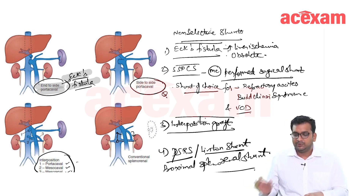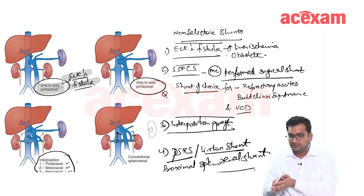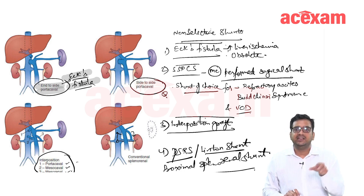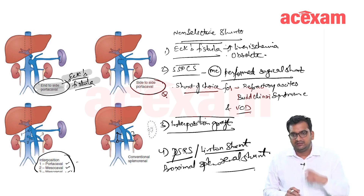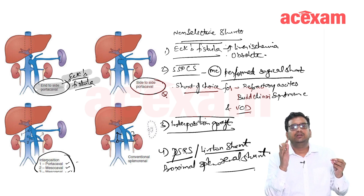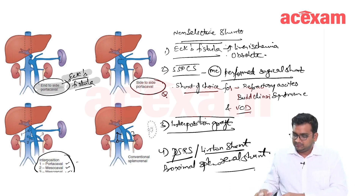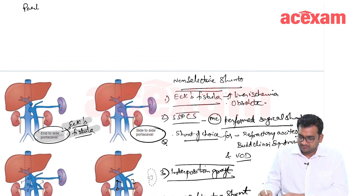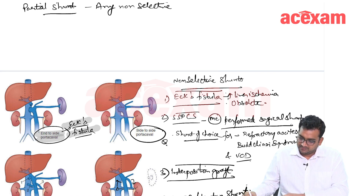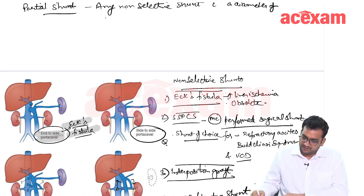All of these are types of non-selective shunts. If we are putting a graft with a size of less than 10 mm, then that complete shunt will become a partial shunt. Some blood will continue to flow in the portal circulation and some will flow through the graft into the systemic circulation. So the partial shunt is basically any non-selective shunt with a diameter of less than 10 mm.